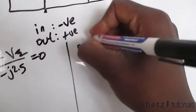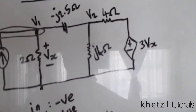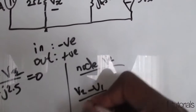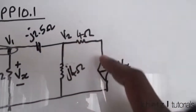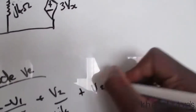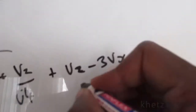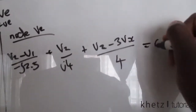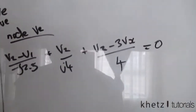Moving on to node V2. All unlabeled currents are assumed to go out. We write: (V2 − V1)/(−j2.5) plus V2/(j4) plus (V2 − 3Vx)/4 = 0. This node has three connected paths, so we expect three terms in the equation.